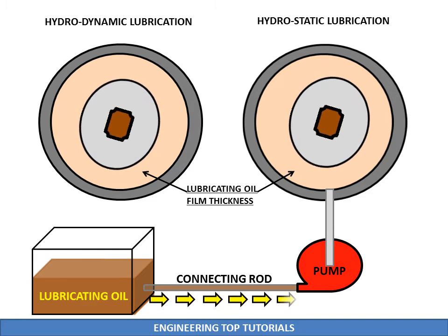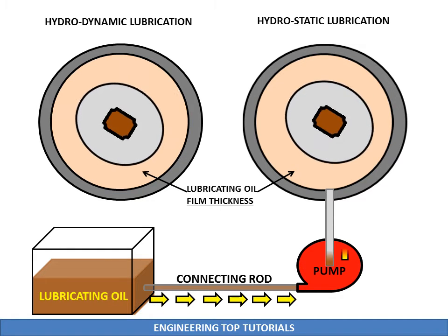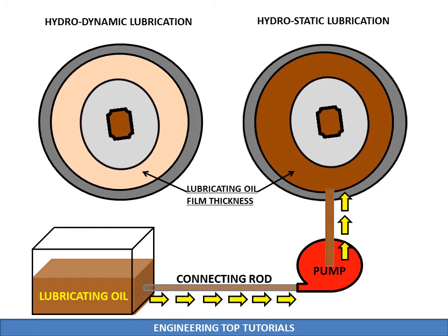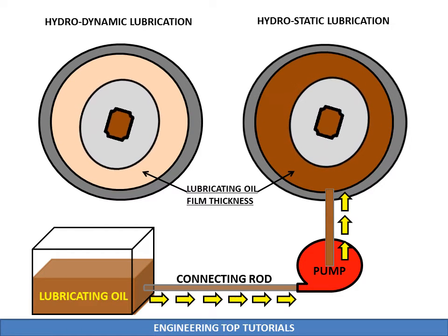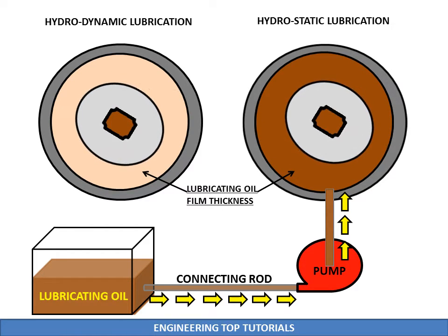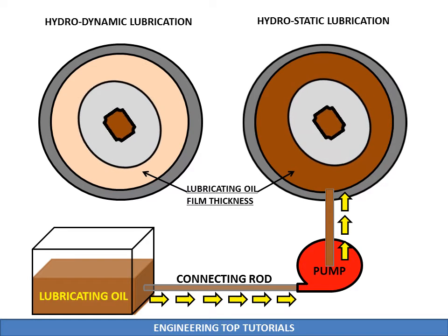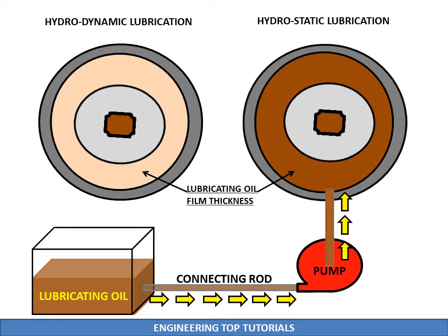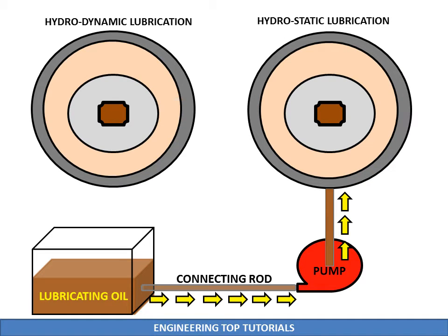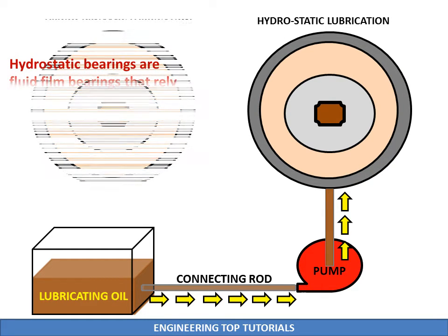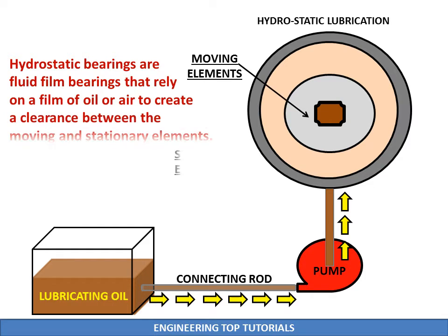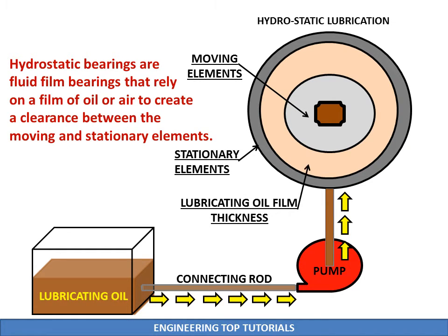In hydrostatic lubrication, clearance between the metal surfaces depends on the inlet pressure of lube oil, whereas in hydrodynamic lubrication it depends on the relative speed between the surfaces, oil viscosity, load, and clearance between the moving surfaces. So we can say that hydrostatic bearings are fluid film bearings that rely on a film of oil or air to create a clearance between the moving and stationary elements.